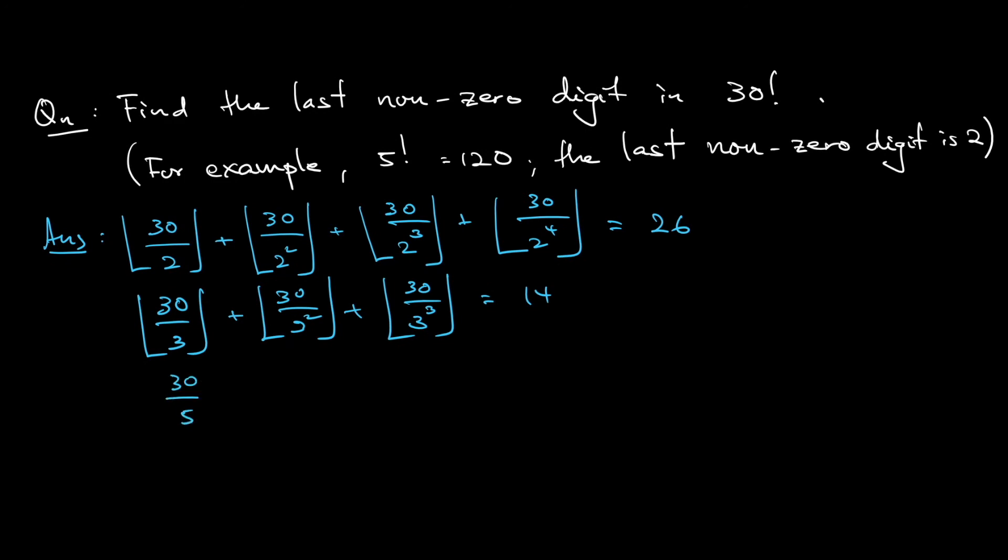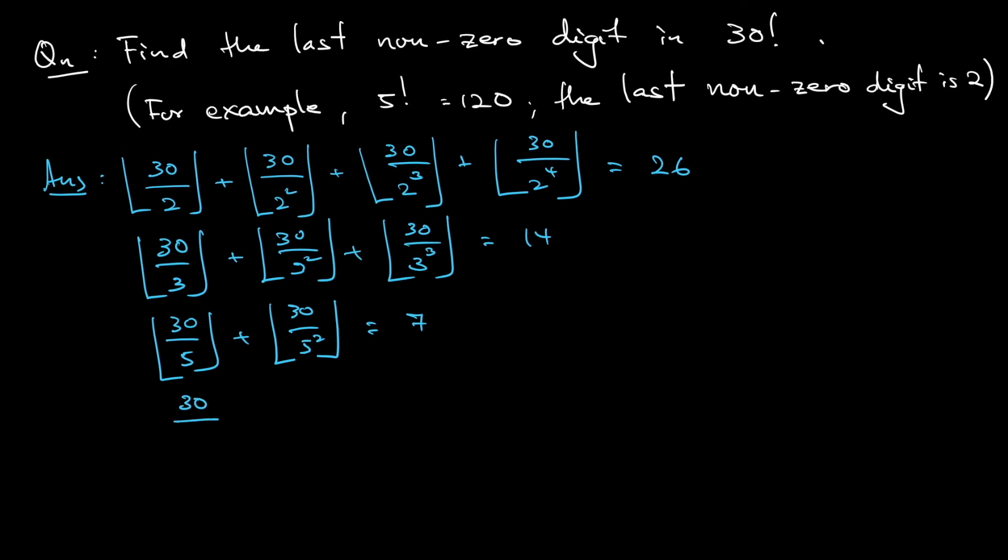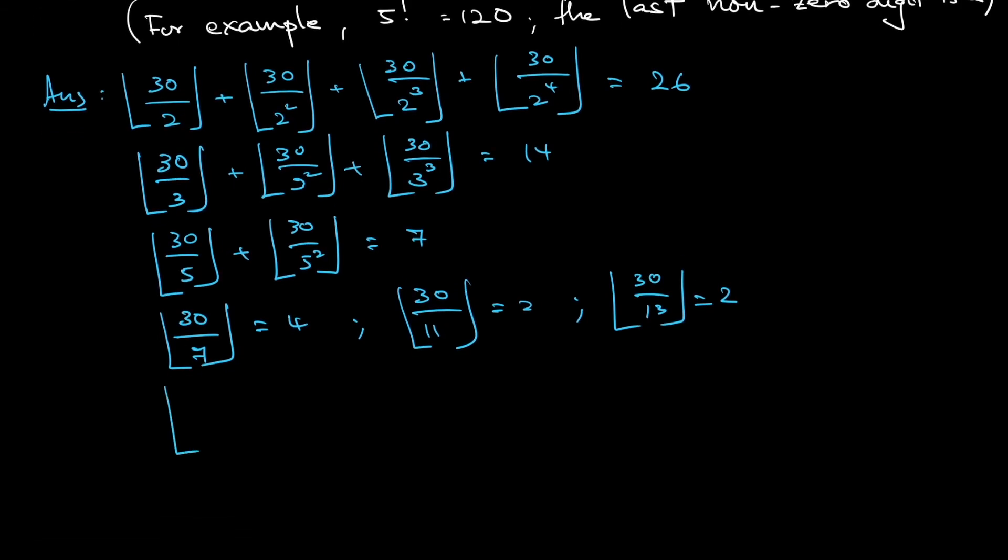The next prime is 5. 30 divided by 5, 30 divided by 5 squared. 5 cubed is already more. So 7, the next prime after 5 is 7. 7 squared is already 49, so do not need to consider that. After this is 11. This is also 2. The next prime is 13, it's also 2. 17 onwards, it's all 1 already. Next prime after 17 is 19, after that is 23, after that is 29, all of this are 1.